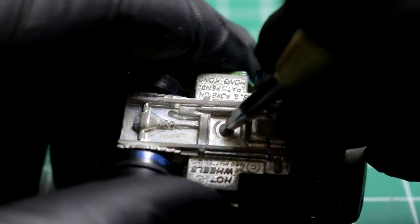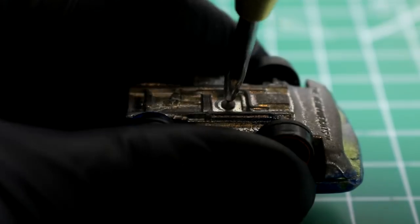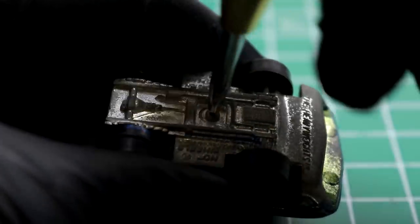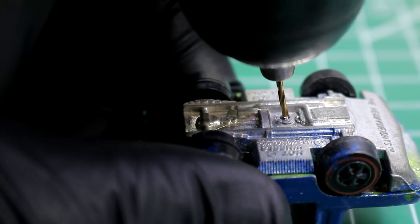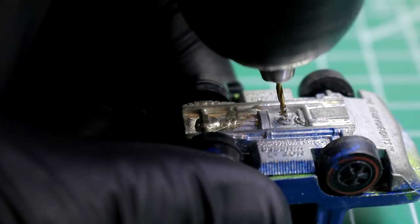So the first thing we're going to do is use our center punch and put a hole in the middle of our rivet. And once that's done, we're going to use a really small drill bit and drill a pilot hole.